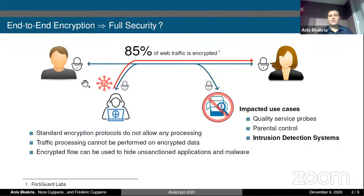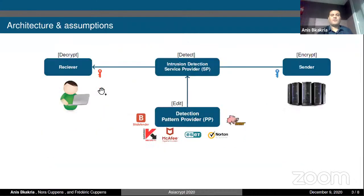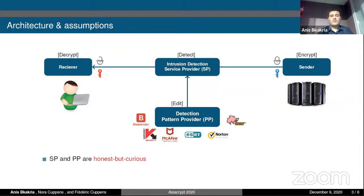We considered a system composed of four entities: a sender, a receiver, an intrusion detection service provider, and a detection pattern provider. The intrusion detection service provider is considered as a third-party entity mandated by the receiver to perform intrusion detection on incoming traffic. The pattern provider represents the security editors that are providing attack signatures. We consider the intrusion detection service provider and the detection pattern provider to be honest but curious entities, and we consider the sender to be an adversarial entity.